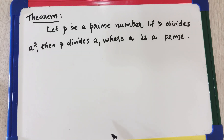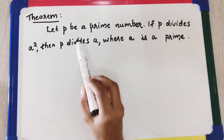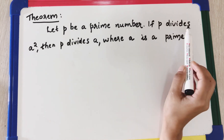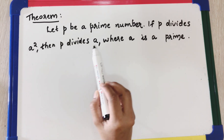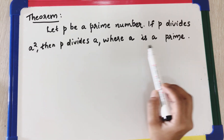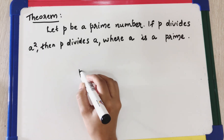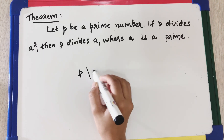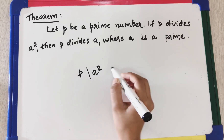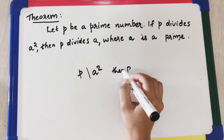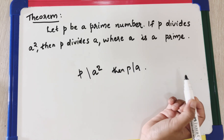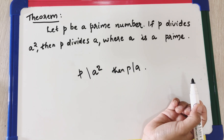Before proving that √2 is irrational, let's look at an important theorem. The theorem states: let p be a prime number. If p divides a², then p divides a, where a is a positive integer. That is, for any prime p, if p divides a² then p divides a.